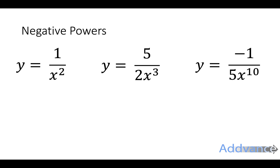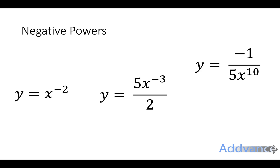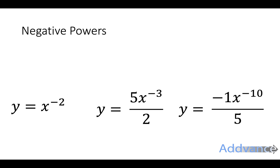For negative powers, it's the same — we just have to make it into a negative power. So y equals 1 over x squared is the same as x to the power minus 2. You need to know that when you have 1 over a power, it just makes the power negative. So 5 over 2x cubed is 5 over 2 times x to the power minus 3. And y equals minus 1 over 5x to the power 10 becomes minus 1 times x to the power minus 10, all over 5. The first thing you have to do when you see a divide is make sure the power is negative.